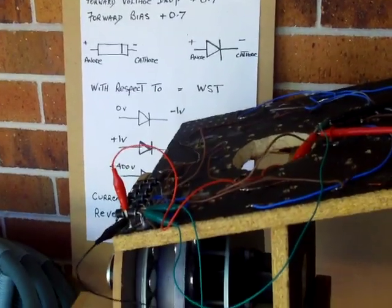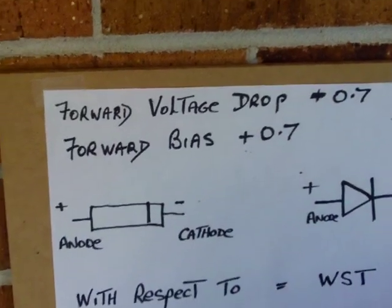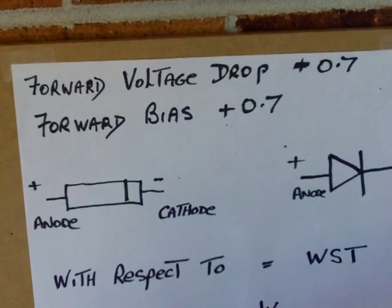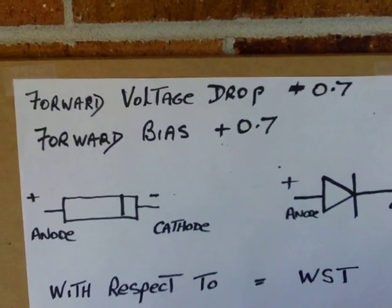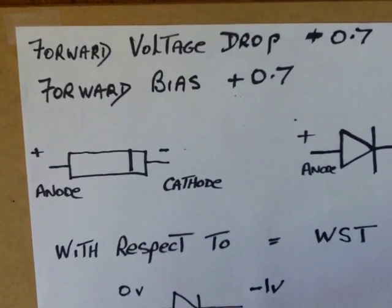Diode Testing. Checking some of the fundamentals. We are talking about silicon doped PN junctions. The forward voltage drop or the forward bias is 0.7V.